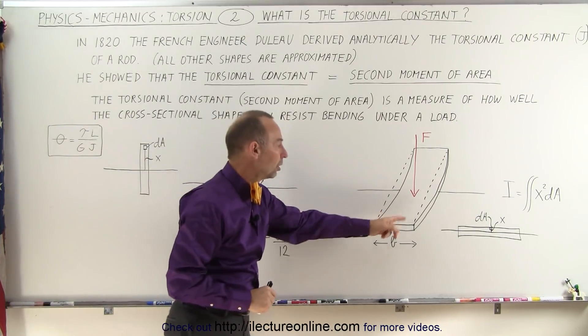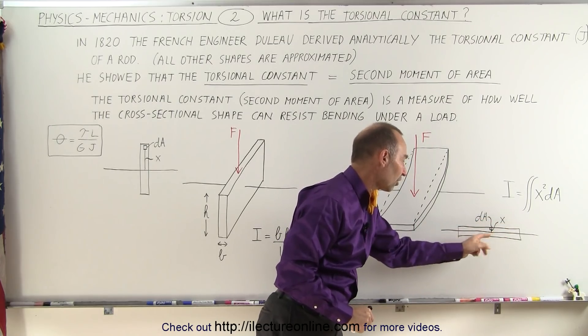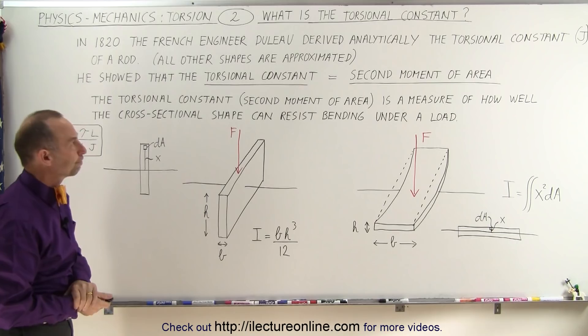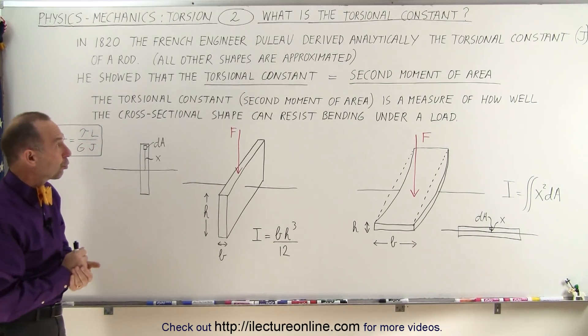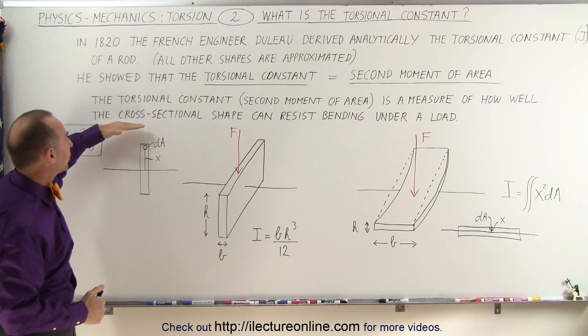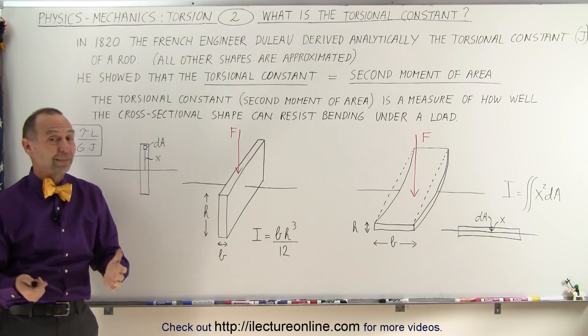If it's a small value, then we can see that most of the area in the cross-section is very close to the line that goes right to the center. Hopefully, this gives you now a much better concept of what we mean by the torsional constant. Remember, it's simply a measure of how well the cross-sectional shape can resist the bending under a load. And that's how we know.